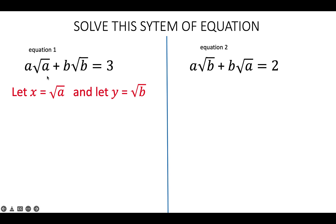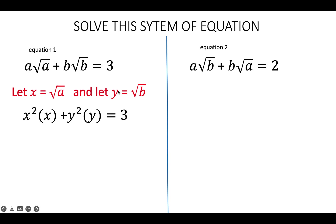With this substitution, equation 1 can now be written as X squared times X plus Y squared times Y equals 3. If we let X equal the square root of A, then A equals X squared — the same for B. So this simplifies as X cubed plus Y cubed equals 3. Let's put this aside and go back to it later.